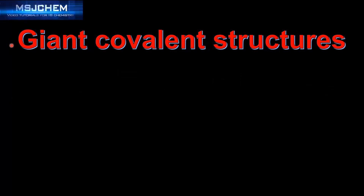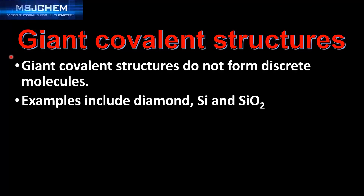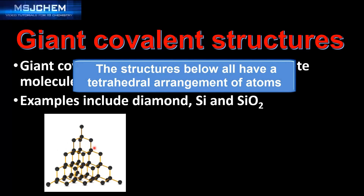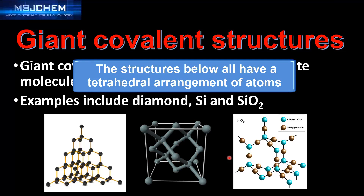Now we'll move on to the next type of covalent structure: the giant covalent structure. Giant covalent structures do not form discrete molecules. Examples include diamond, silicon, and silicon dioxide. Here we can see the structure of diamond, this is silicon, and this is silicon dioxide. As you can see, they do not form discrete molecules; rather they form giant covalent structures.